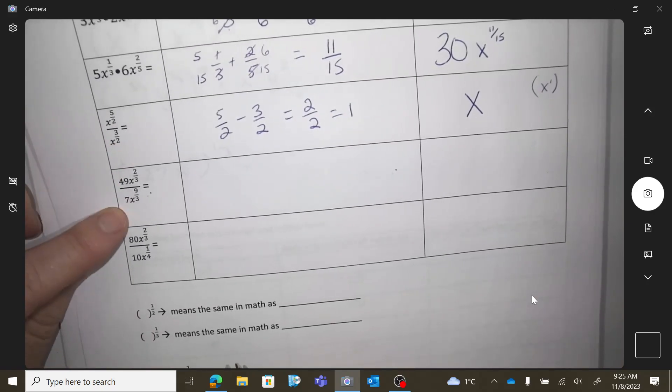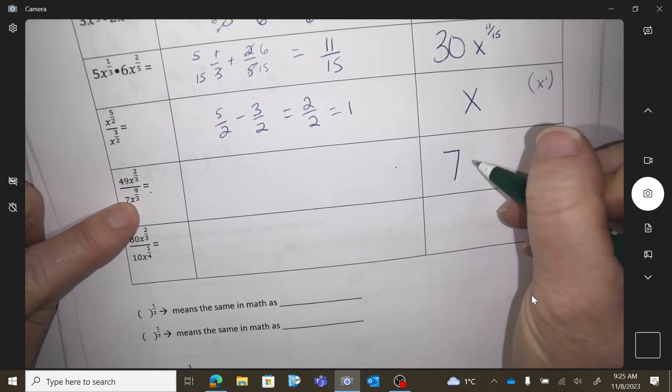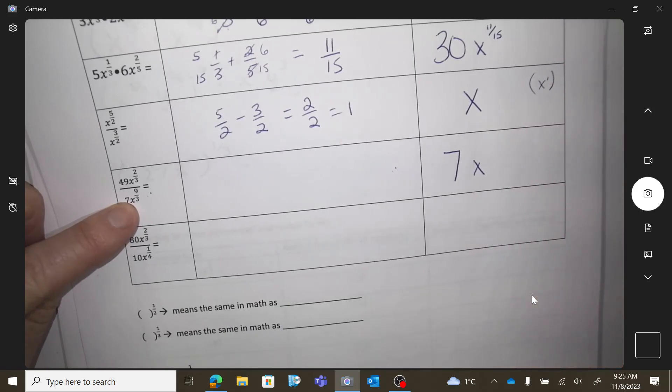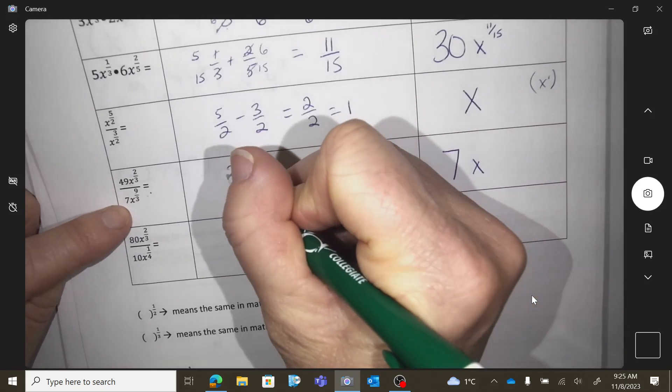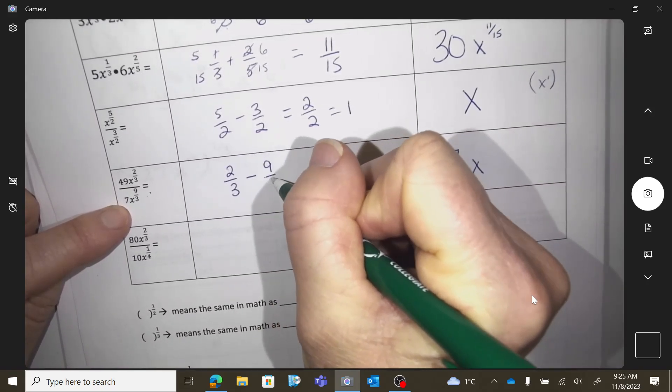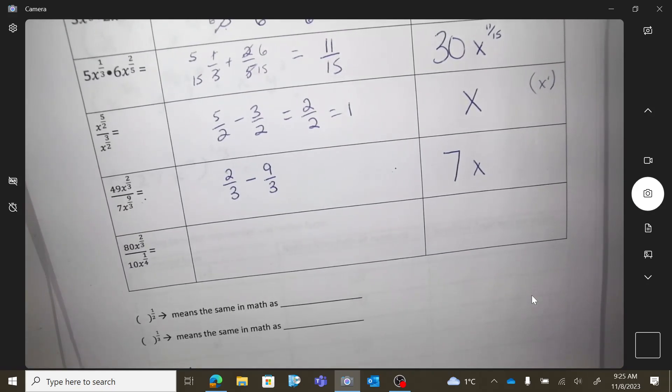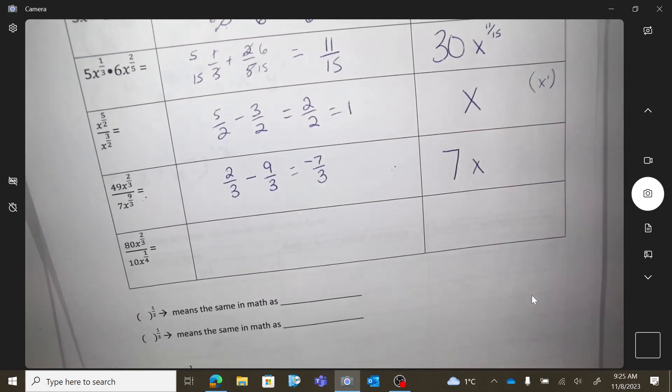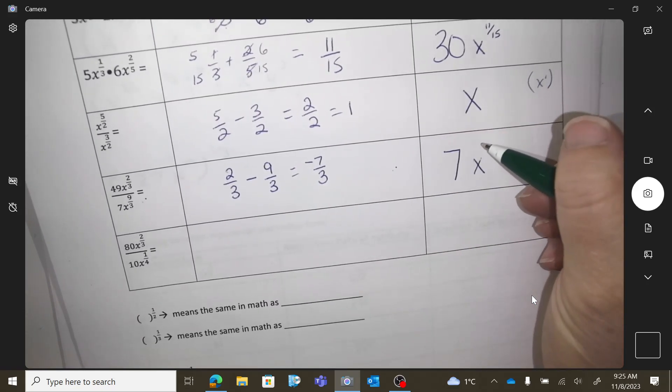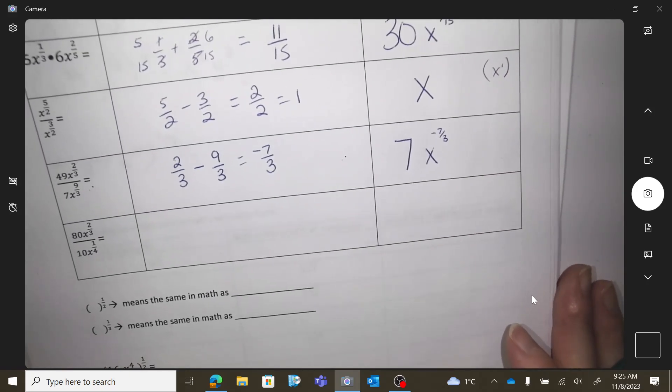Okay, division. So I'm going to divide the coefficients with just math. So 49 divided by 7. x to the... And then I do rules. Exponent rules. So I would subtract... And again, those are over the same denominator. So I can just go 2 minus 9 is negative 7.